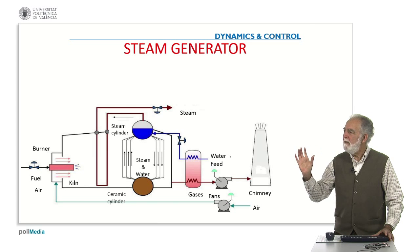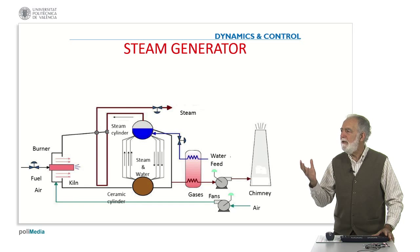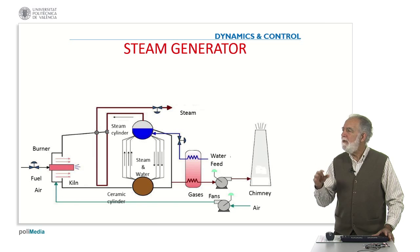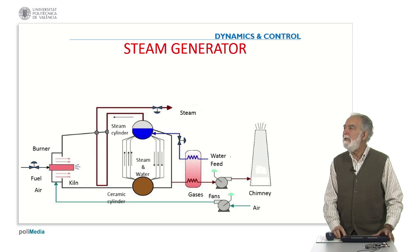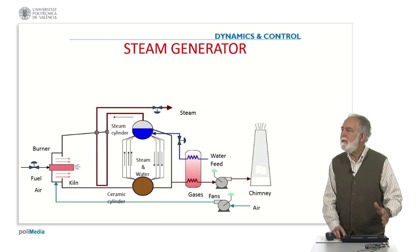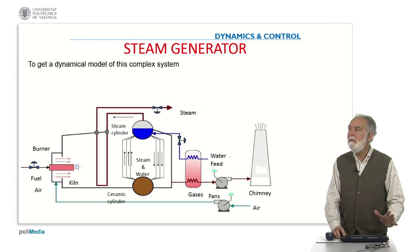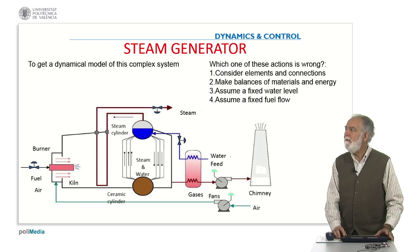the steam generator itself, the chimney, the fans and so on. So, if we try to develop a dynamic model of the system, we should make some steps and the question is: to get a dynamical model of this complex system, which one of these actions is wrong?